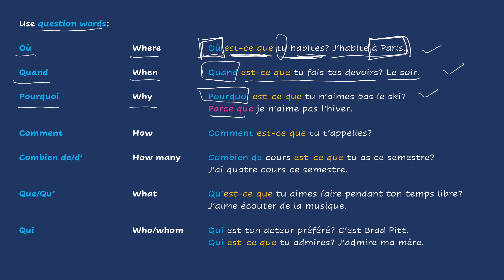And the answer: parce que. Parce que je n'aime pas l'hiver — because I don't like winter. So in the answer, you notice you are going to use parce que, which means because. Comment? How? Comment est-ce que tu t'appelles? You already know this type of question. Je m'appelle Nathalie.